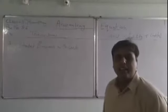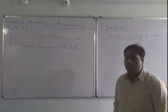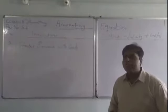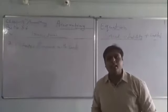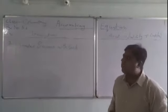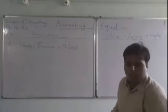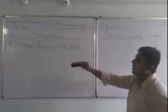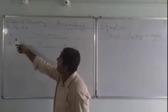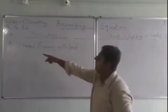Good morning everyone. We are starting with Part 3 of the accounting equation. We are following T.S. Grewal, page number 5.6. In the first two parts I have already covered the basics as well as illustration number one. Now we are moving to illustration number two. The format of the accounting equation has serial number, transactions, and asset equals liability plus capital.